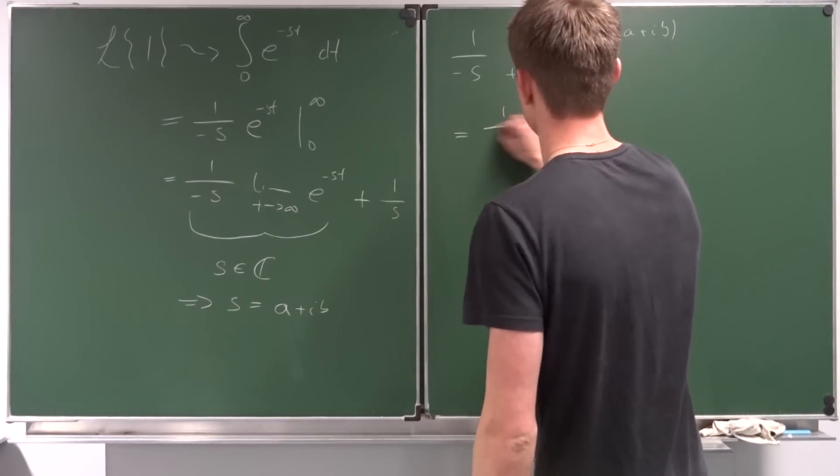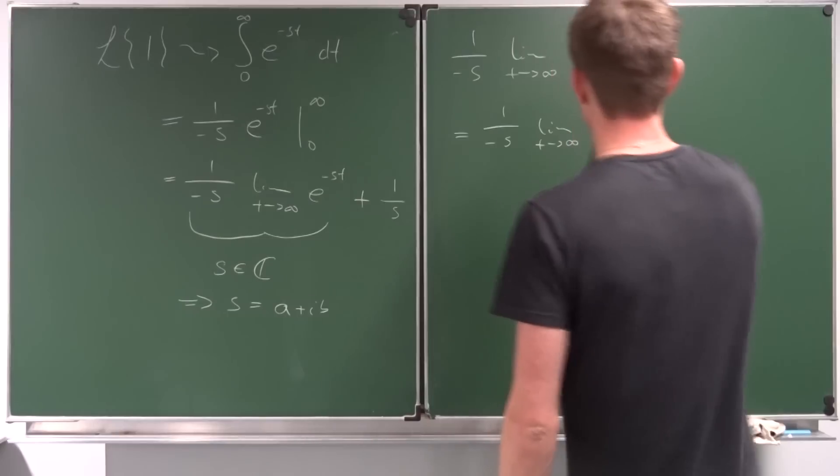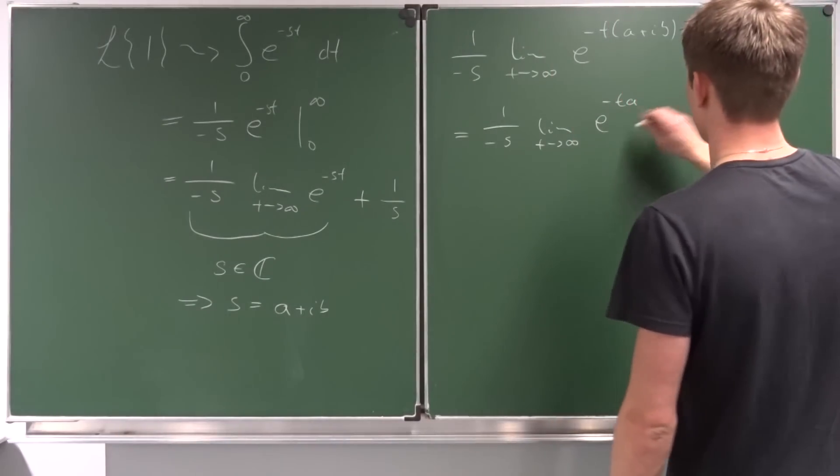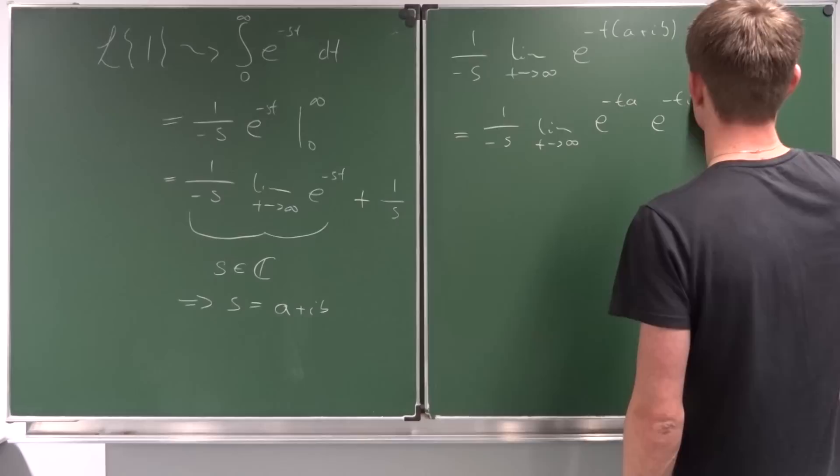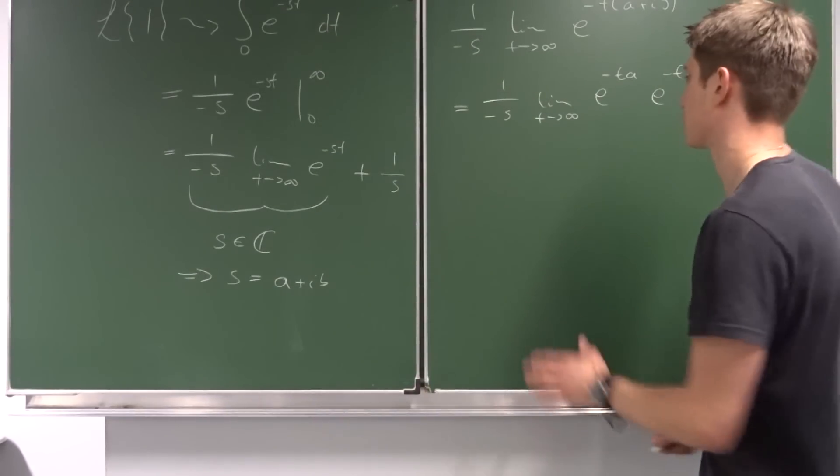So this equals one over minus s times the limit as t approaches infinity of e to the minus t times a, times e to the minus t times ib. And now you'll see where I'm going with this.